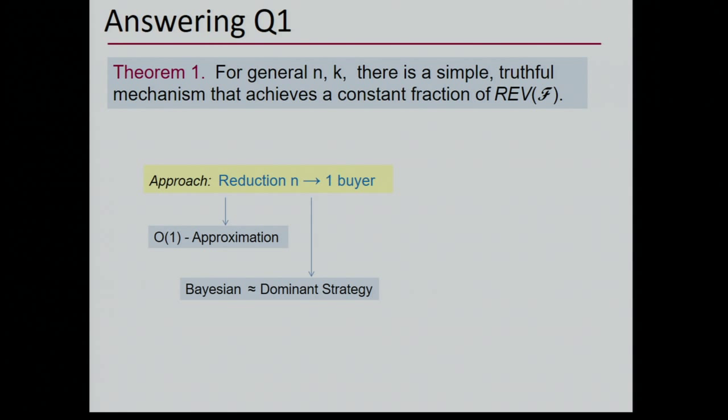This reduction is useful not just for answering question one, but for answering question two as well. It shows that the Bayesian IC can achieve at most a constant factor more revenue than the dominant strategy IC. There are some other consequences as well.